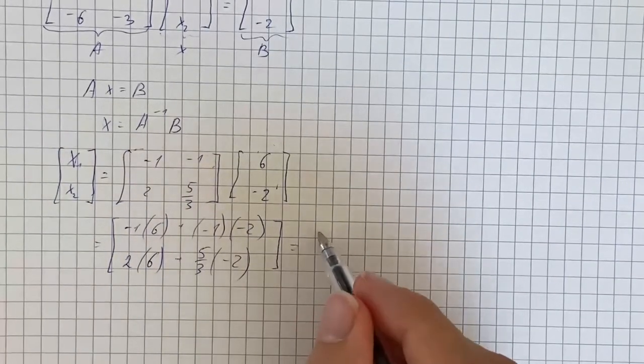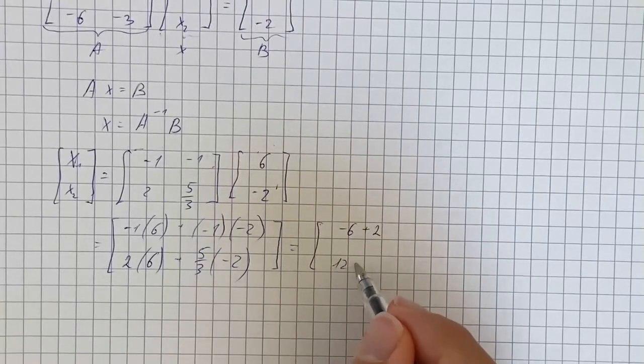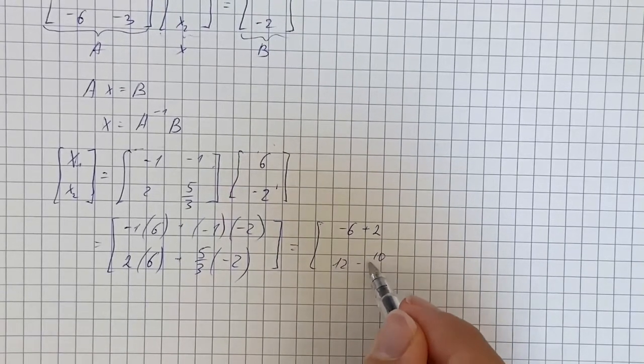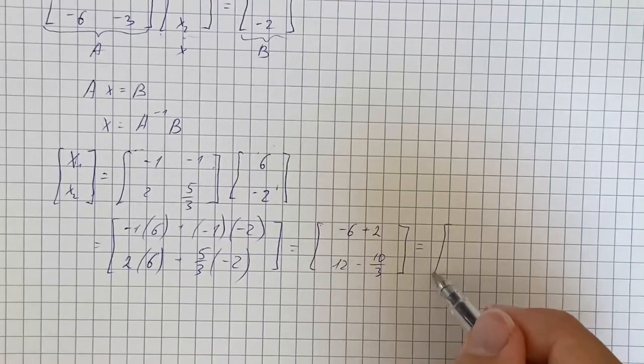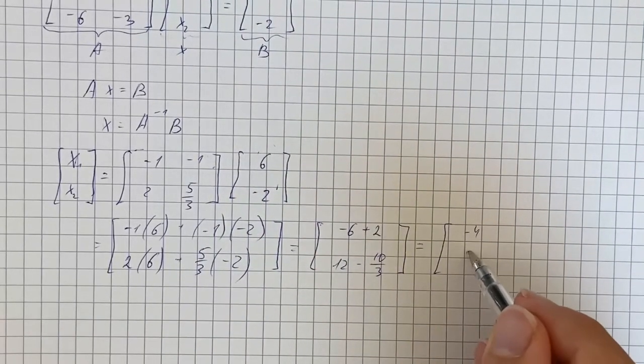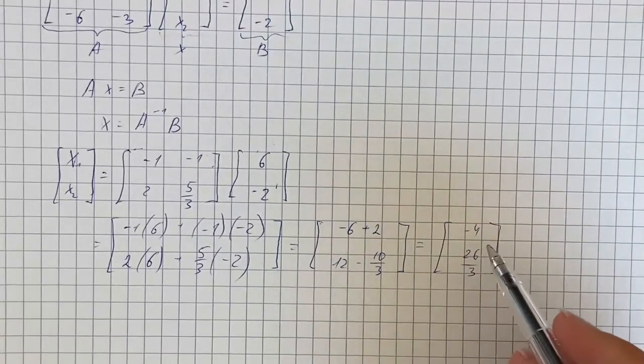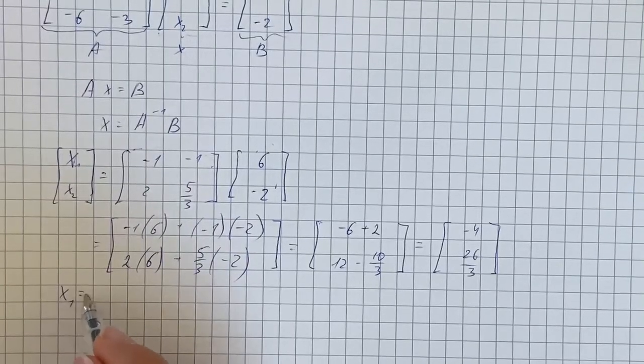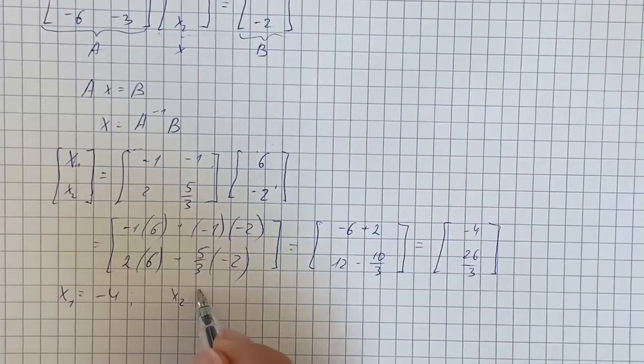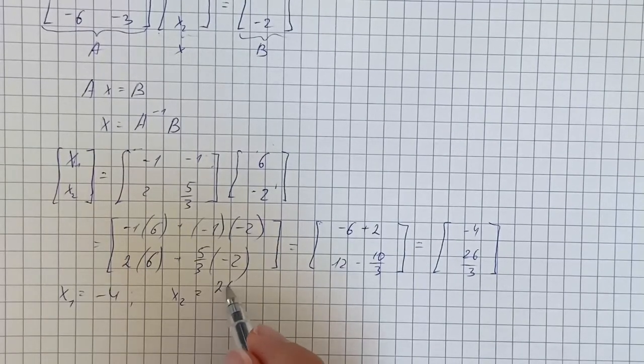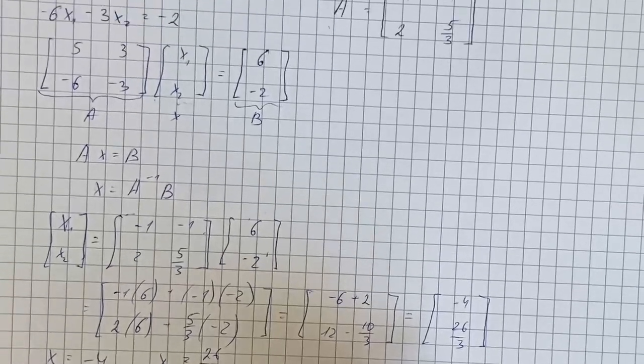Therefore we get -6 + 2, 12 - 10/3, and that's going to be -4, 26/3. Therefore we get that x1 equals -4 and x2 equals 26/3. This is our solution for the given system of equations.